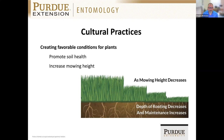One often overlooked aspect of cultural practices is mowing height. As mowing height increases, so does the depth of roots in the soil. The shorter we mow, the shallower the roots, and the more maintenance-intensive that turf grass becomes. Take a golf course putting green versus a typical higher-cut lawn — it's a lot harder to manage turf at a tenth of an inch than at three or four inches.